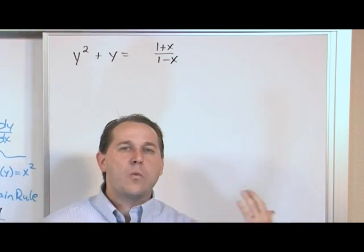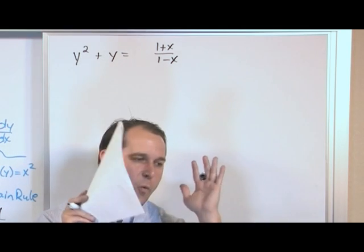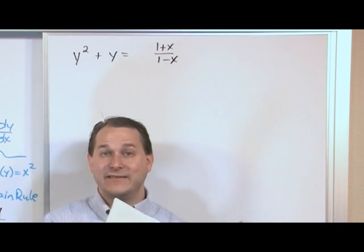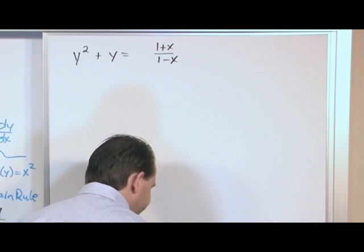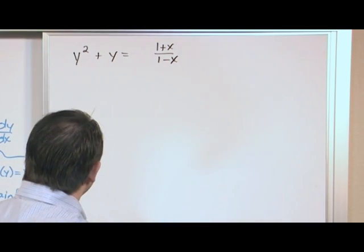In other words, we know how y and x are related, but we don't have y on one side of the equal sign by itself. So the way we do that is we take the derivative of both sides.